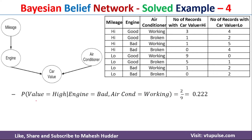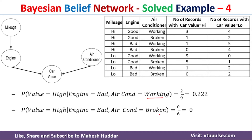With the same approach we can calculate the probability of value equal to high given engine is bad and AC is working, and given engine is bad and AC is broken. These give us all the probabilities for value equal to high. For the complementary probabilities — for example, probability of value equal to low given engine equal to bad and AC equal to working — that is 1 minus 0.222.